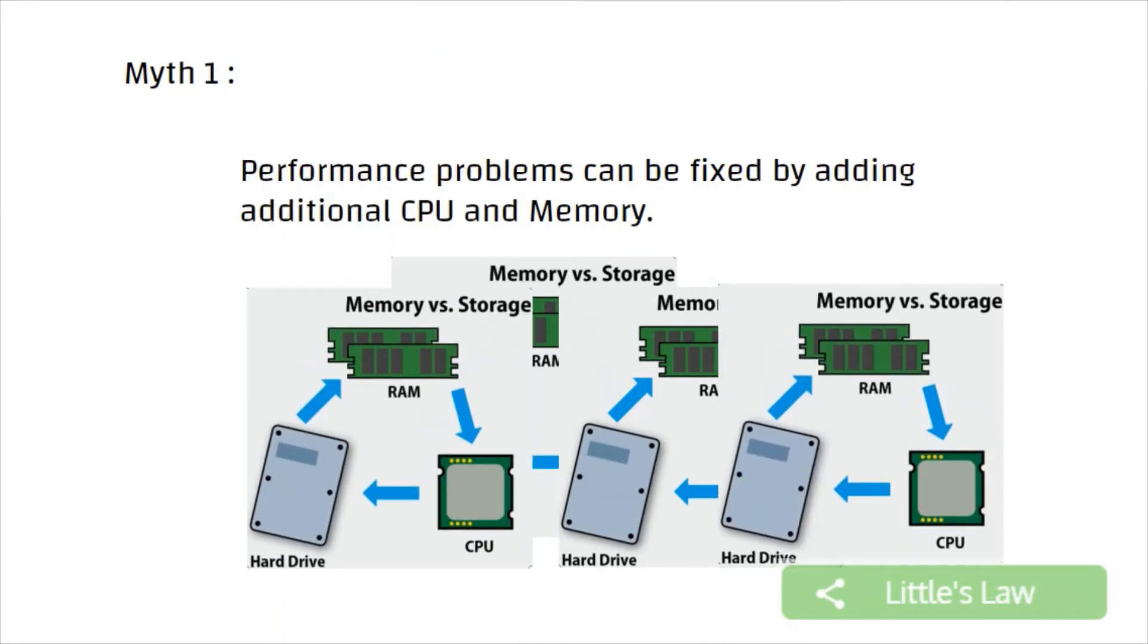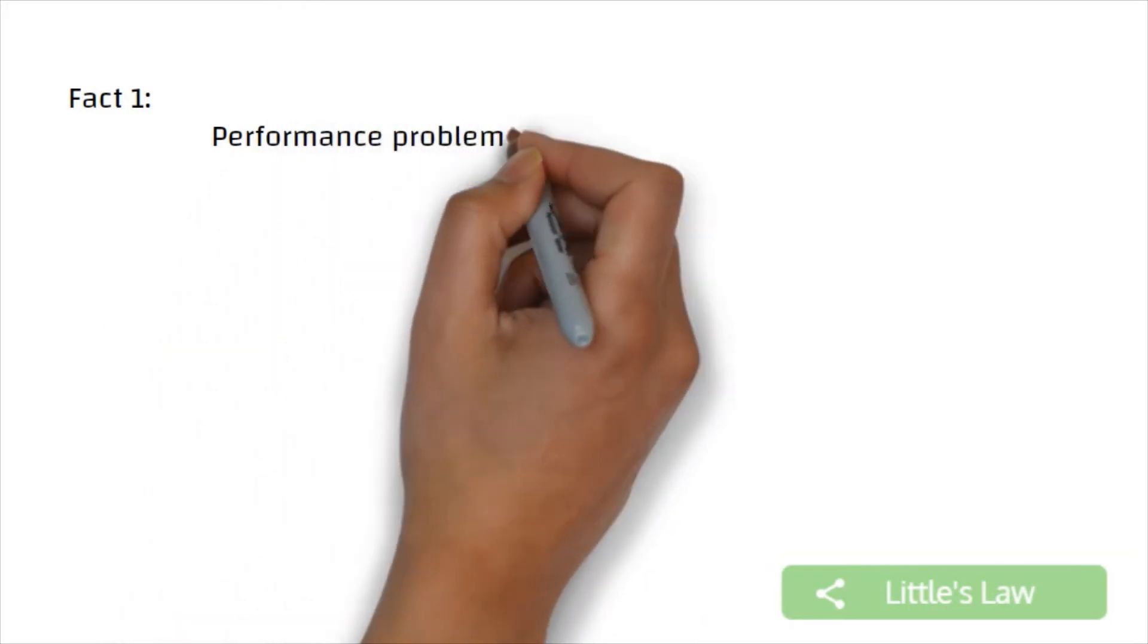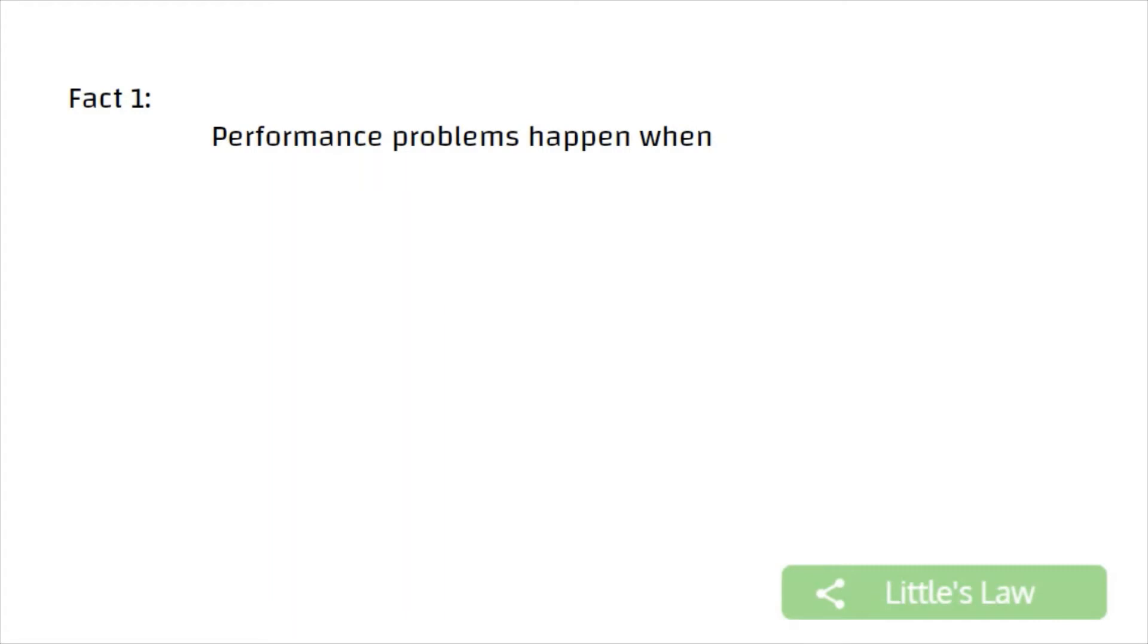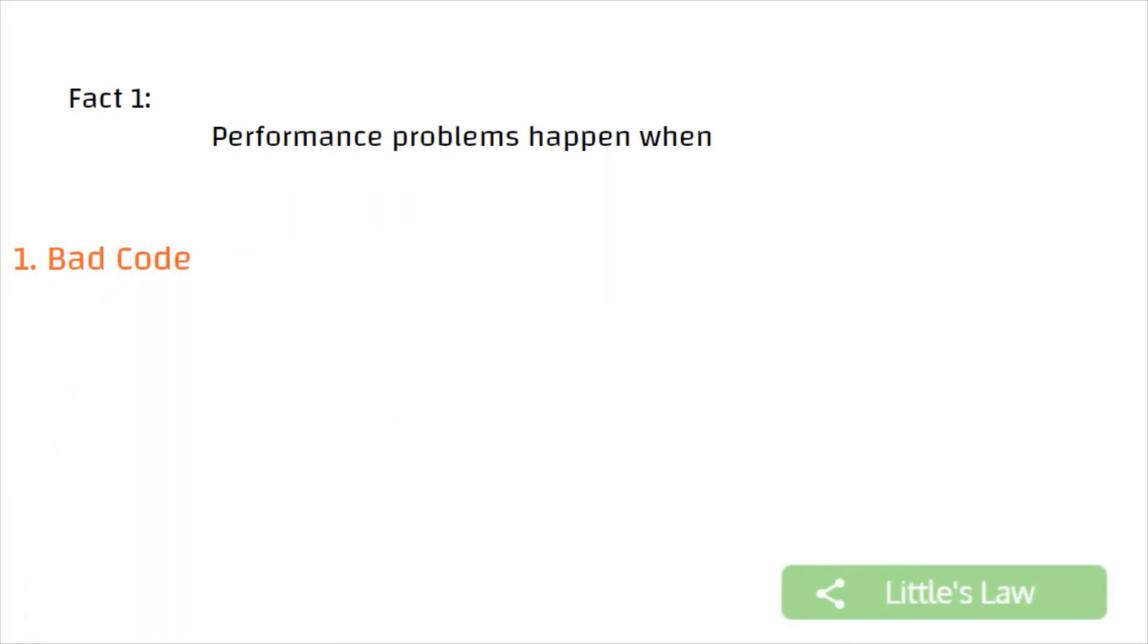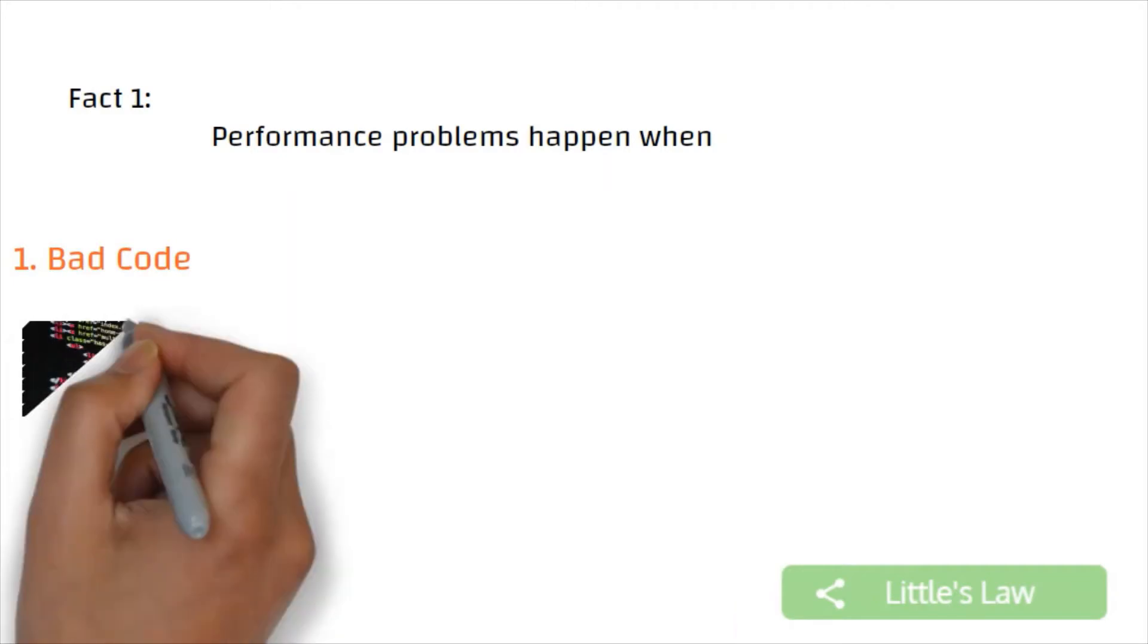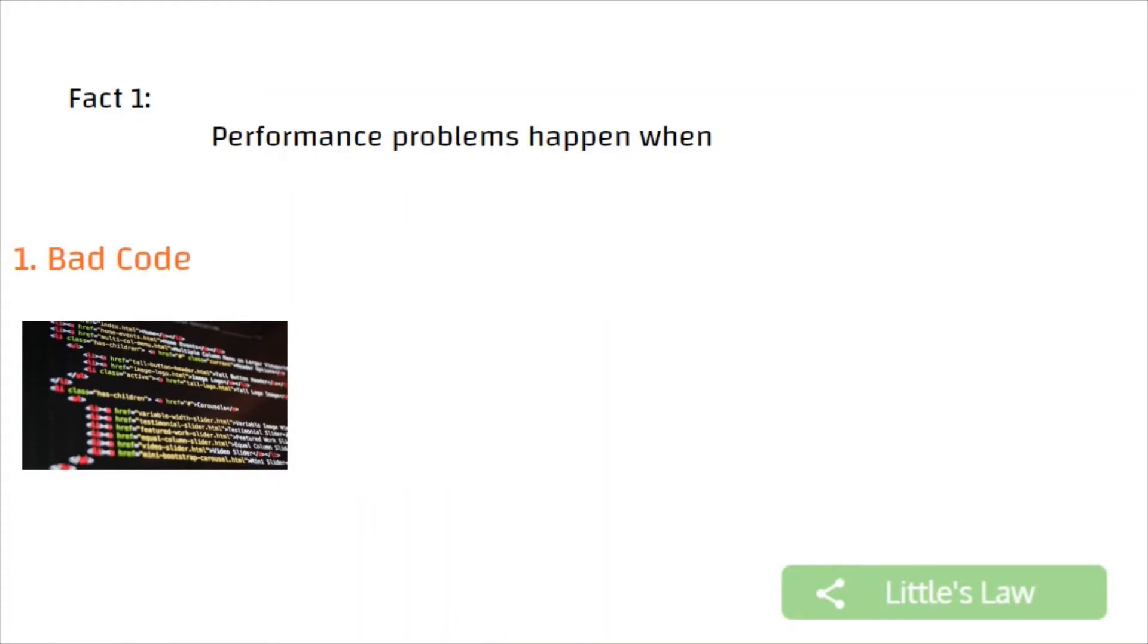Performance issues are not always hardware related. Performance degradation can happen for a variety of reasons. First, bad code: a poorly written code can degrade the application's performance and lead to problems like memory leaks or synchronization issues. This can happen due to inefficient code or inefficient algorithms.